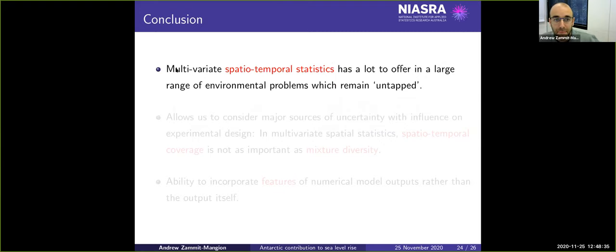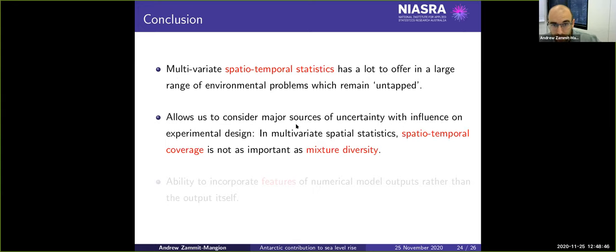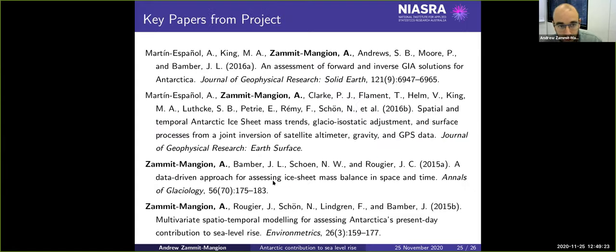Right. So to conclude, this is what I showed you as a branch of multivariate spatio-temporal statistics. It has a lot to offer in a large range of environmental problems. It allows us to consider major sources of uncertainty. And one thing which comes out from this study is that actually having a diversity of measurements is much more important than having an abundance of one type of measurement, because you need to tease out what's going on from the different processes by observing mixtures of those processes. And we also haven't included numerical model output in our framework, but we've included features of the numerical model output, which is very different. And that allows us in some sense to validate the numerical model output. These are some papers from the project. And that's it from me. Thank you.